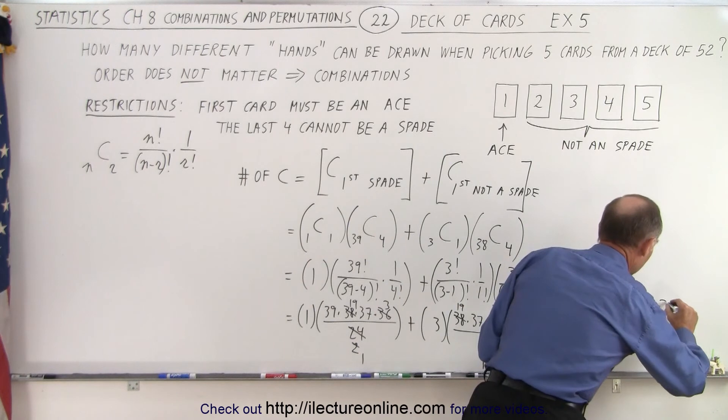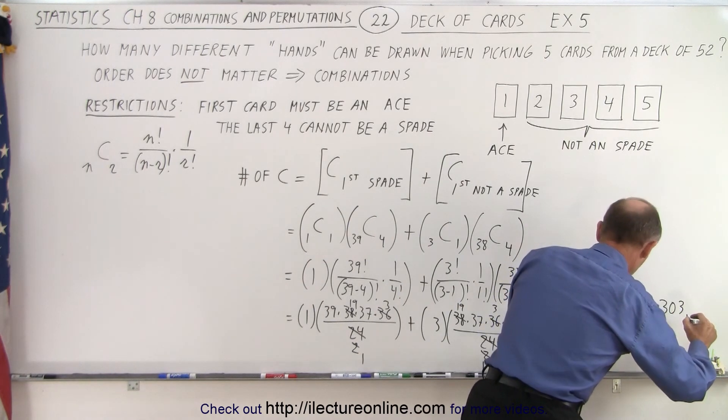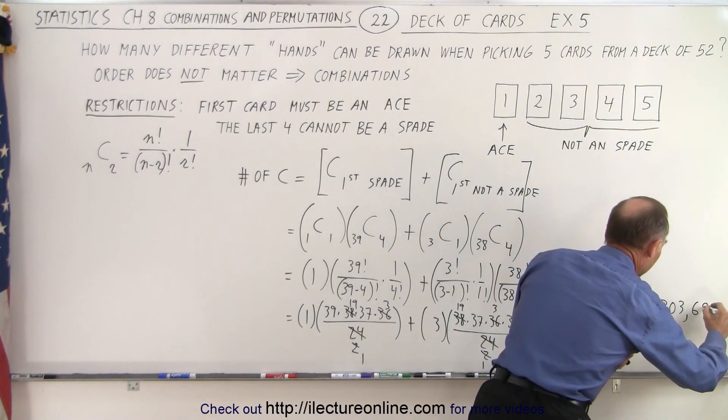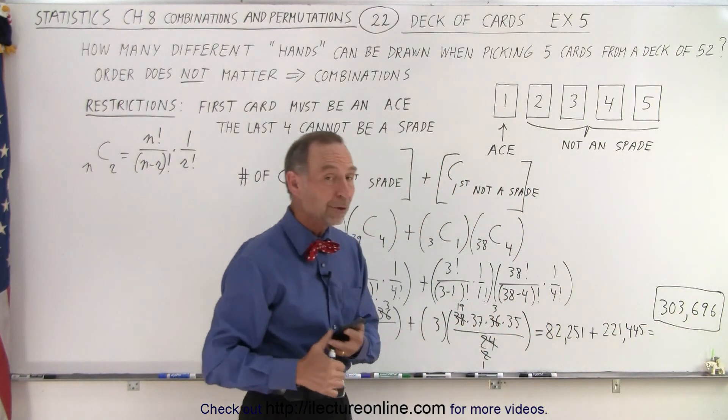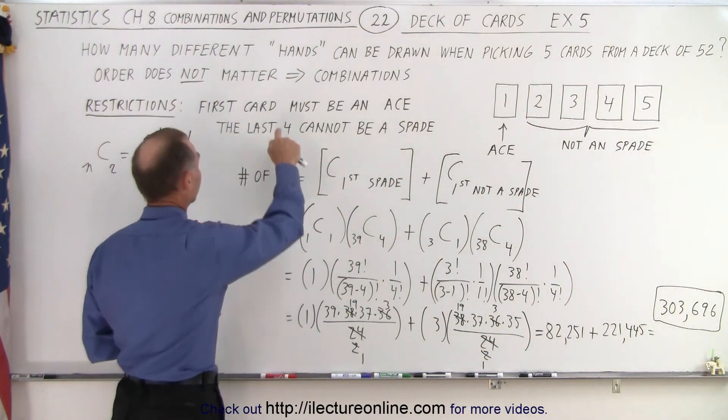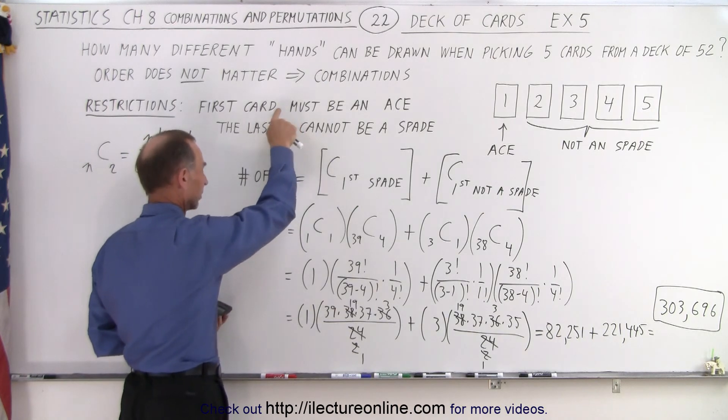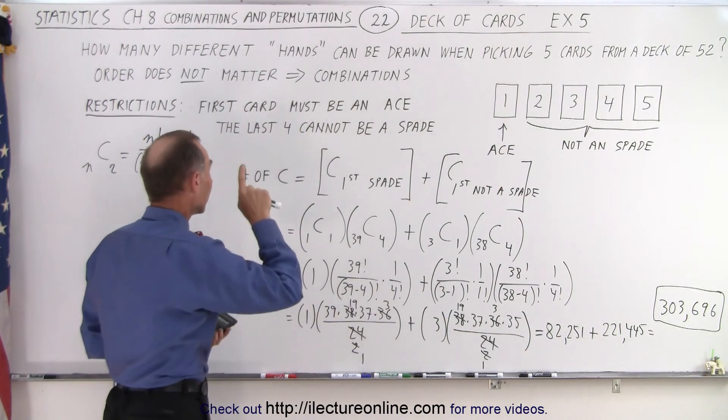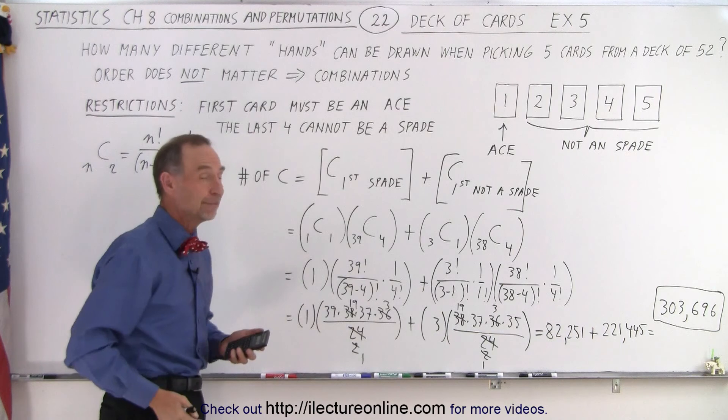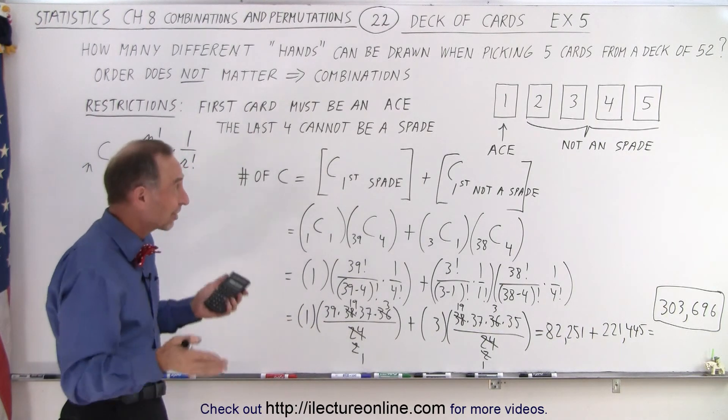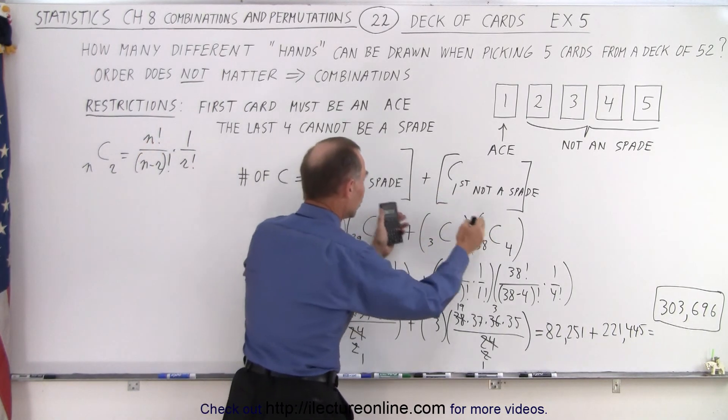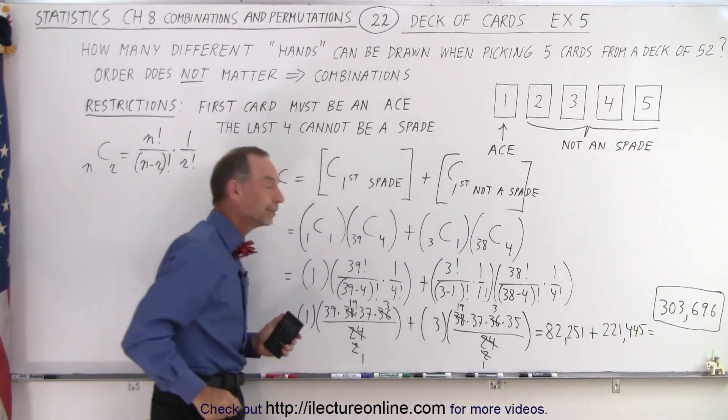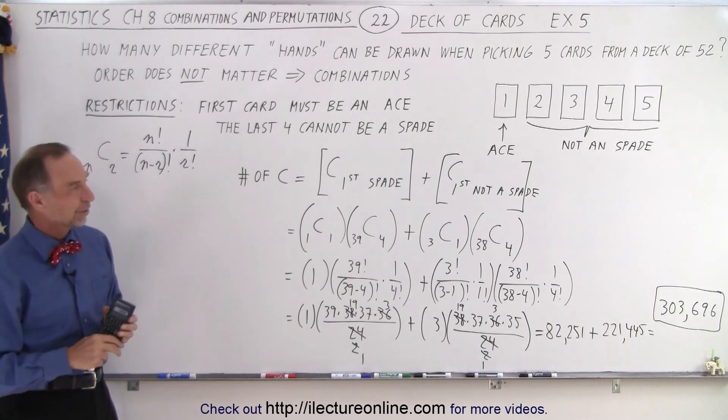When we use the following restrictions, the first card must be an ace, and the last four cards cannot be a spade. And so since one of those aces can be a spade, or may not be a spade, we have to calculate it in two separate steps, and add them together, and that is how it's done.